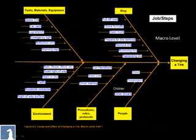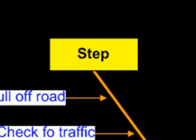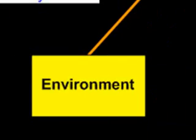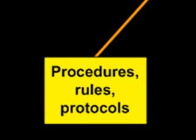In the previous job hazard analysis video on the use of the cause and effect diagram, we showed how you would break out five ribs to identify the basic areas and information needed for changing a tire. There would be the basic steps, the tools, materials and equipment, the environment in which you may be doing the changing of a tire, any rules, procedures, and protocols that are involved, and the people that might be involved or exposed to the changing of the tire.